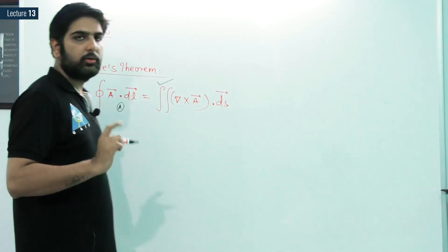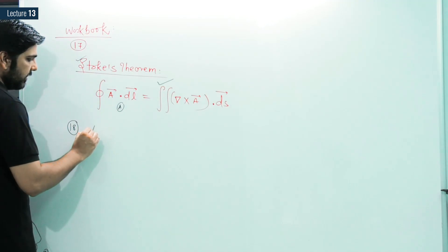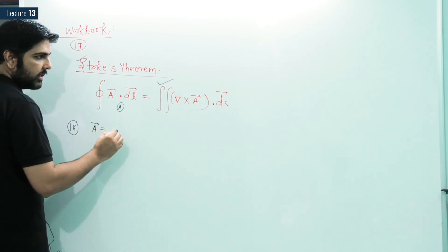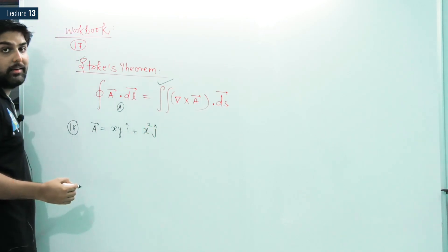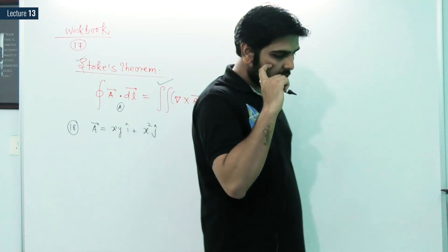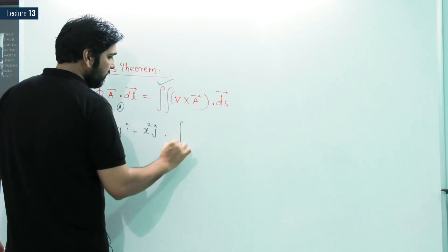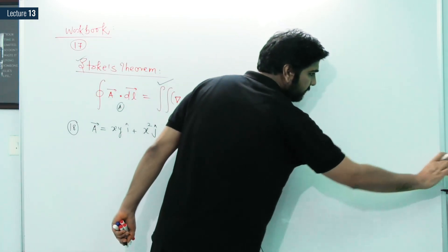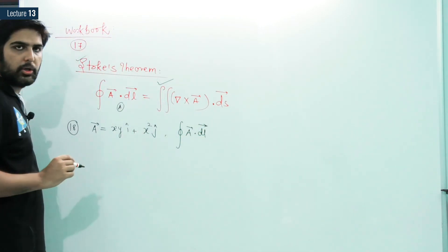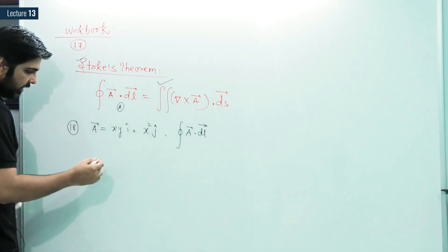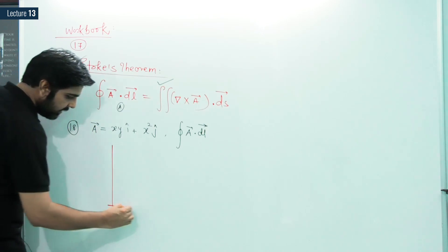Let us start question number 18, which is from IIT Guwahati 2010. A vector A is given as xy î + x²ĵ, where î and ĵ are unit vectors in the x and y directions. We need to evaluate the line integral ∮A·dl over the path shown in the figure. The path is plotted on the x-y axis.